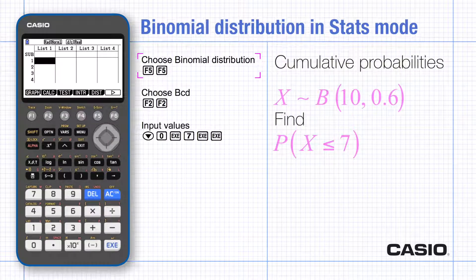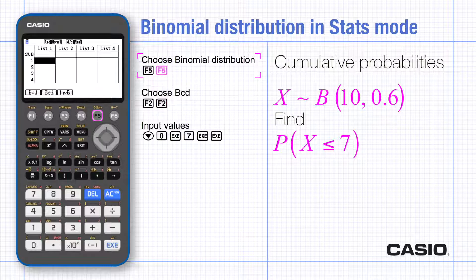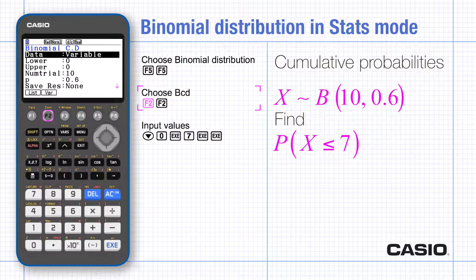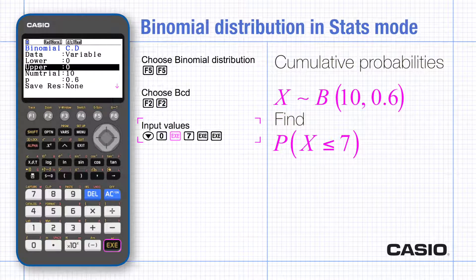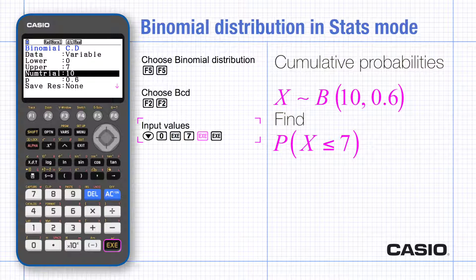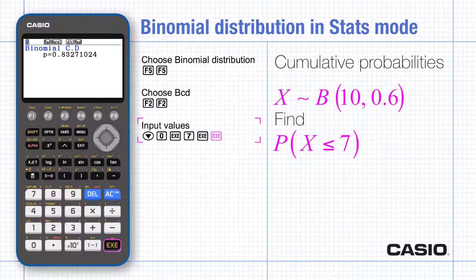Choose distribution and binomial as before but now use BCD and variable. Scroll down to input the smallest and the largest values of X. Do take care if your region has a strict inequality. There's no need to retype the values for N and P — just execute.